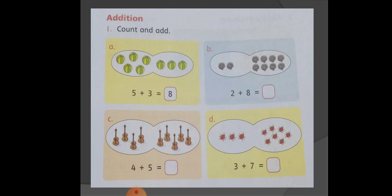Now, in next pic, there are total ten shells. 2 plus 8 is equal to 10. Now, let's move towards the violins. There are total 9 violins. 4 plus 5 is equal to 9. In last pic, there are total 10 ladybirds. 3 plus 7 is equal to 10.